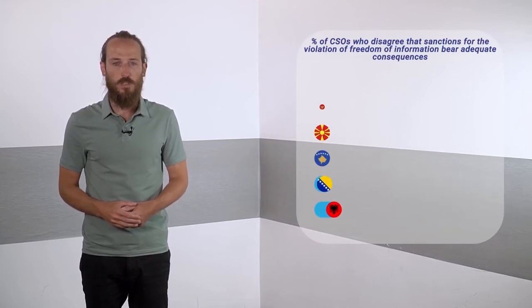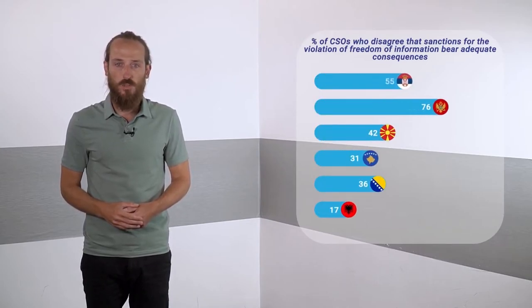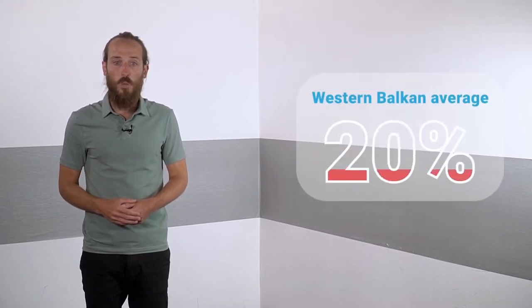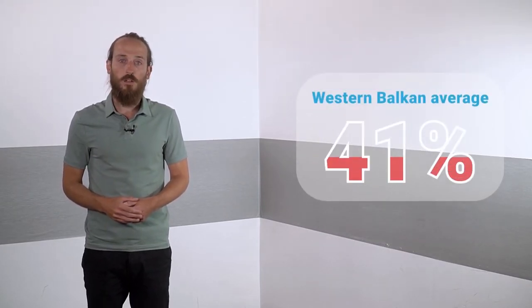Civil society organizations in the region have continued to express largely negative views on how free access to information is implemented. One fifth of them believes that public authorities record sufficient information and data to enable proper exercise of this right. In addition, almost half of CSOs who participated in the survey did not see that sanctions for the violation of this right bear adequate consequences for those responsible, with Albania being the positive outlier.